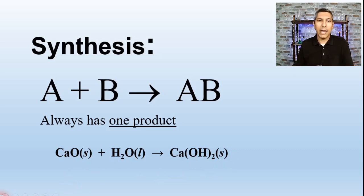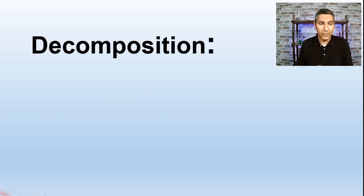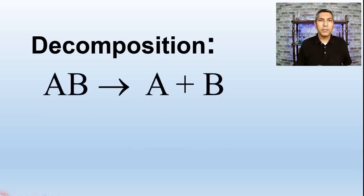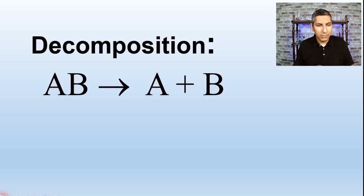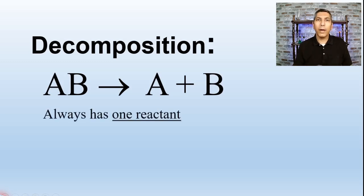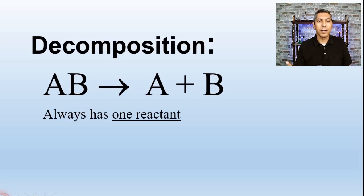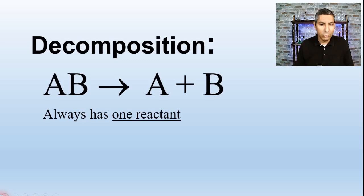The second type of reaction is called decomposition. This is the complete opposite of a synthesis process. We start out with one reactant, and it literally decomposes or breaks down to form two or sometimes more than two products — AB yields A plus B. You can recognize a decomposition reaction because it always has one reactant on the left side of the arrow, breaking down into two or more products.